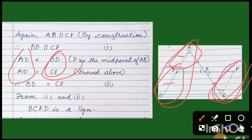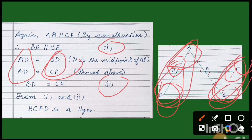From our proving steps 1 and 2, we can say BCFD is a parallelogram. How is it a parallelogram? Because its two opposite sides are both parallel and equal: BD is parallel to CF and BD is equal to CF. Two opposite sides being parallel means this quadrilateral is a parallelogram.